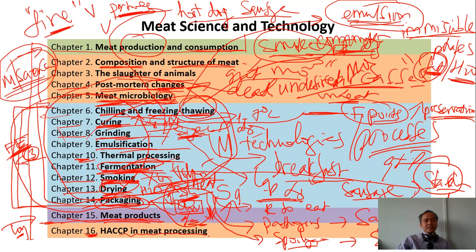Chapter 16, HACCP in meat processing. What is HACCP? Hazard Analysis of Critical Control Points. I don't expect to teach you everything about HACCP. These are just some tips, because you already studied the principle of HACCP. This is just some tips how to apply efficiently in meat processing. After Chapter 5, we will have midterm exam.